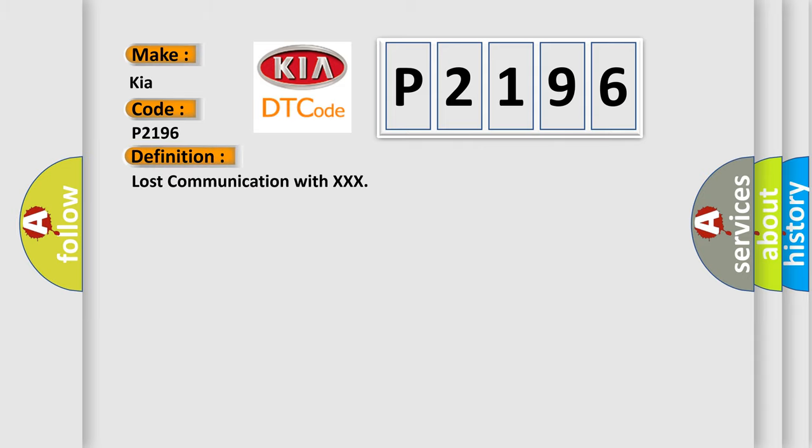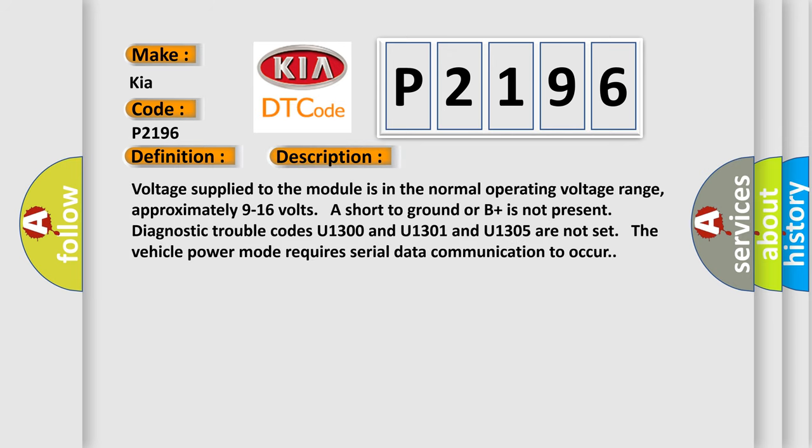The basic definition is Lost communication with XXX. And now this is a short description of this DTC code. Voltage supplied to the module is in the normal operating voltage range, approximately 9 to 16 volts. Short to ground or B plus is not present. Diagnostic trouble codes U1300, U1301, and U1305 are not set. The vehicle power mode requires serial data communication to occur.